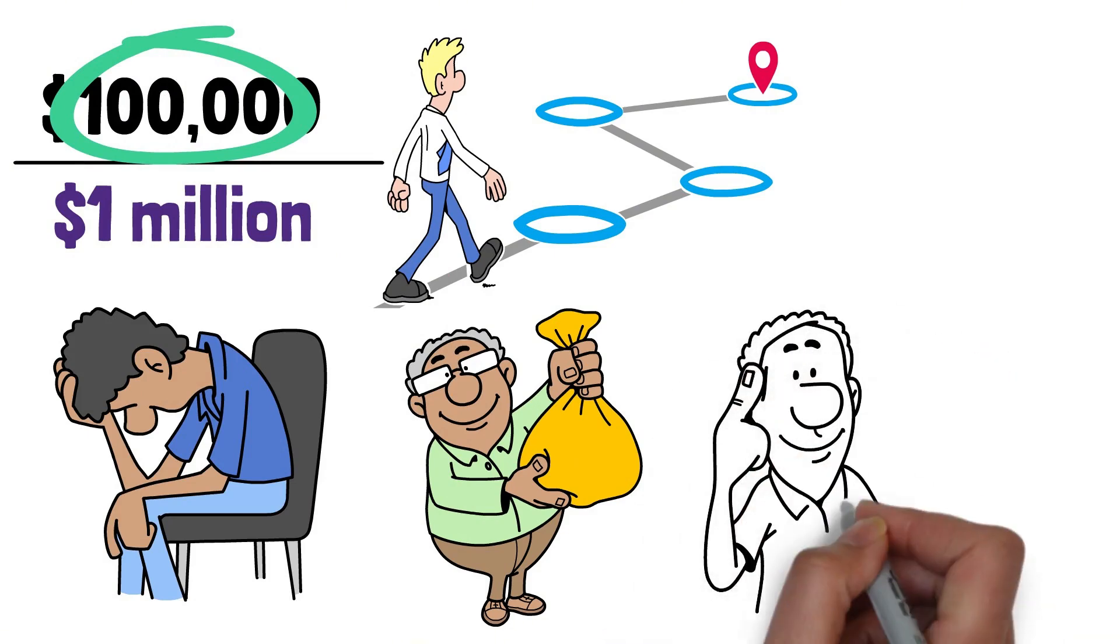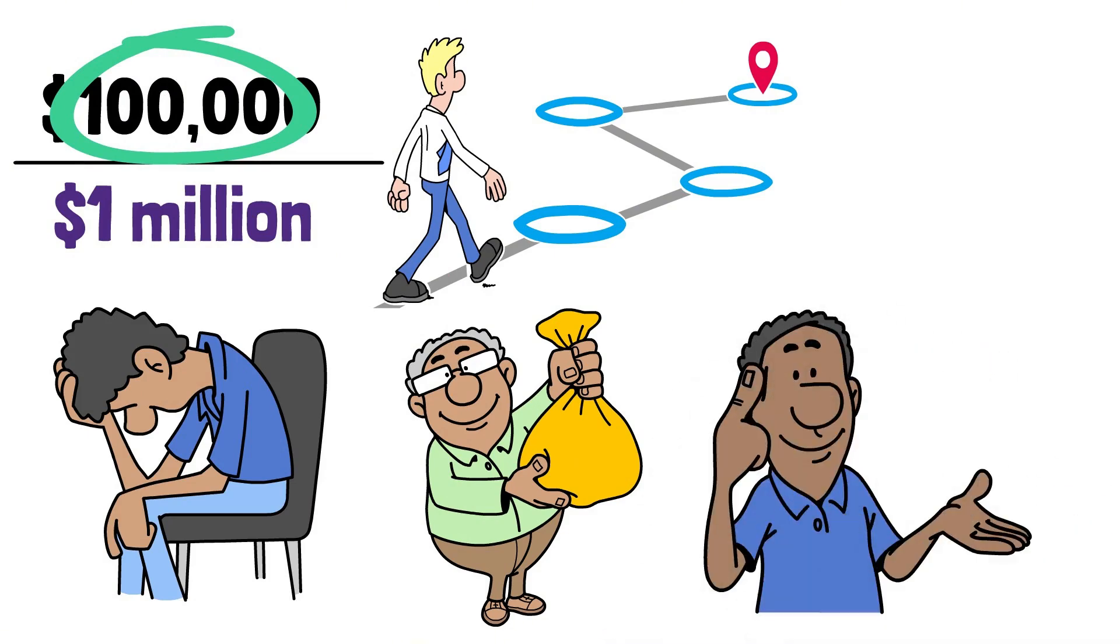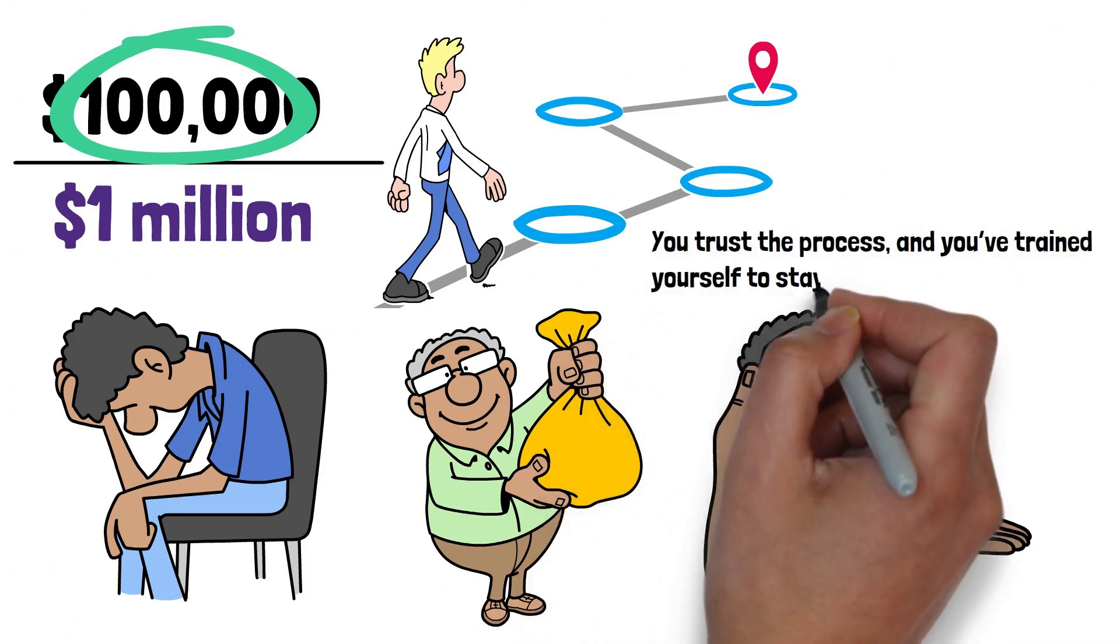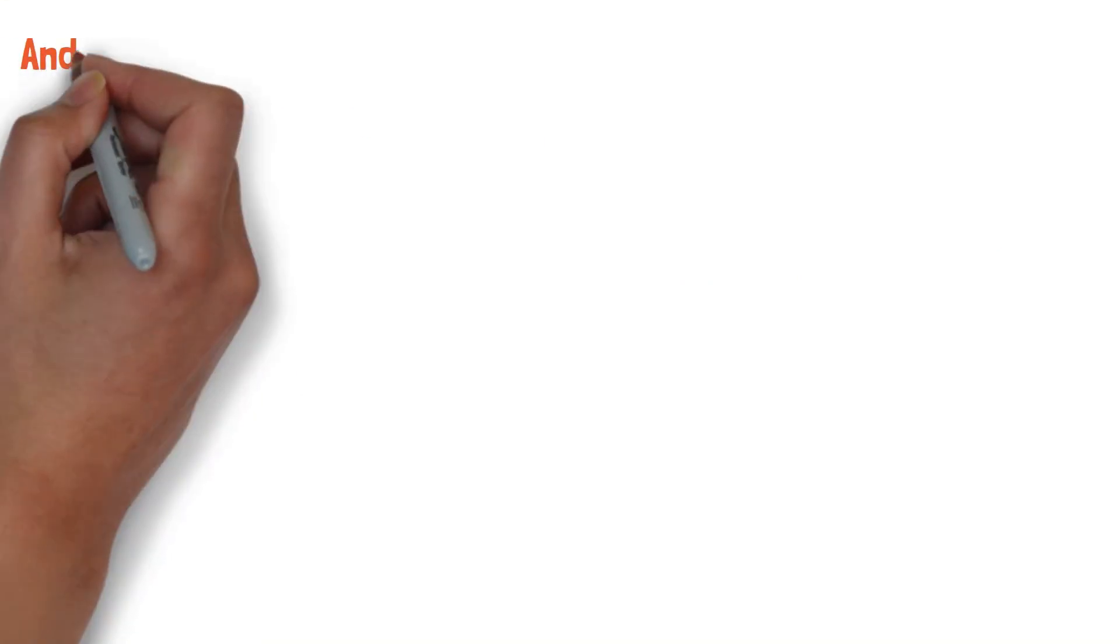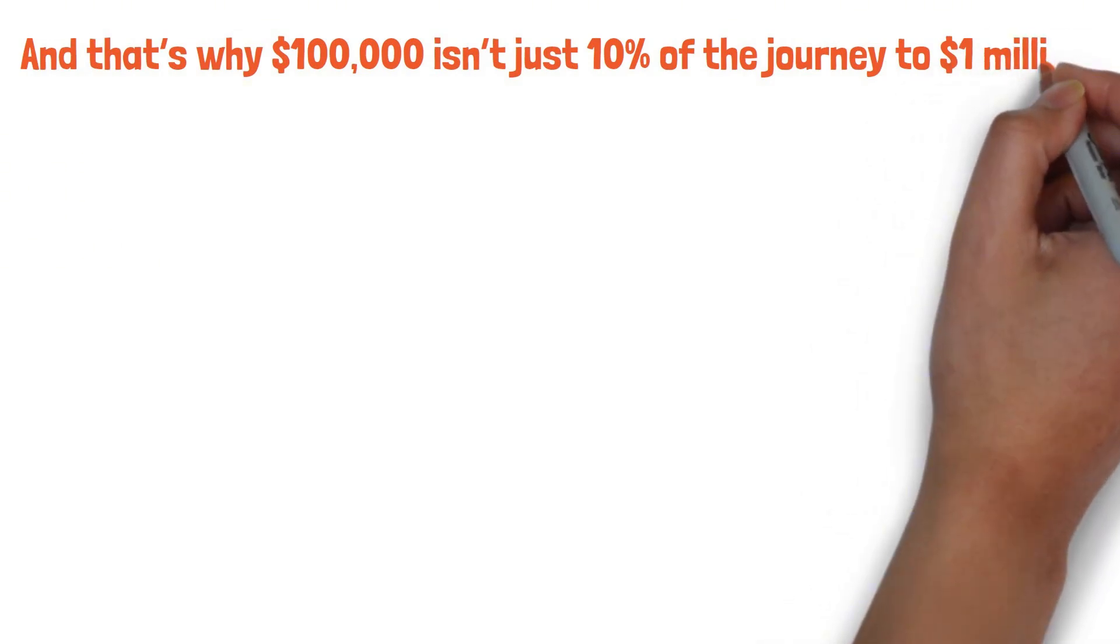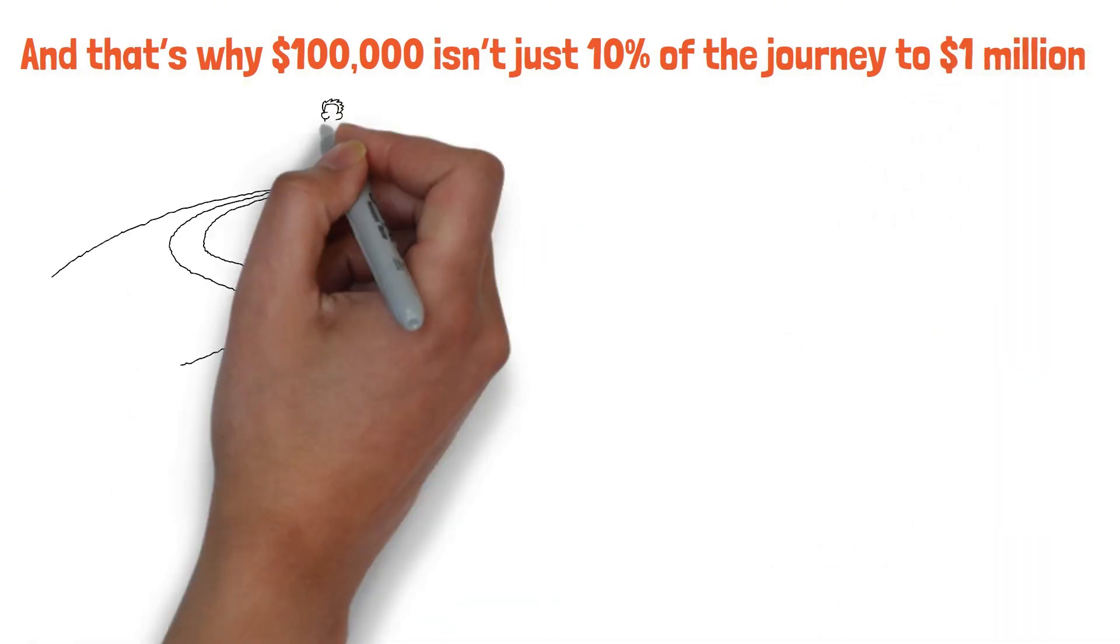But once you break through, everything accelerates. You've crossed the psychological threshold where you trust compounding, you trust the process, and you've trained yourself to stay consistent. And that's why $100,000 isn't just 10% of the journey to $1 million, it's one-third of the journey for those who make it there.